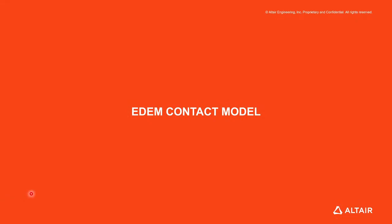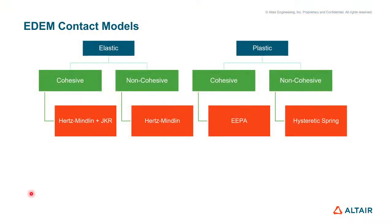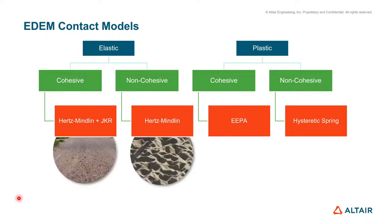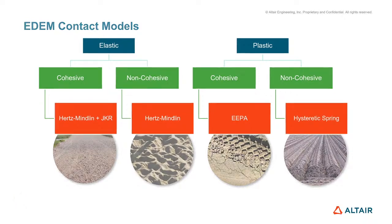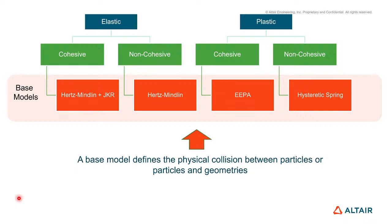그럼 지금부터 E-DEM에서 제공하고 있는 컨택 모델들에 대해 설명드리겠습니다. E-DEM의 컨택 모델은 기본적으로 소성성의 유무와 응집력의 유무에 따라 총 4가지로 구분됩니다. Hertz-Mindlin, Hertz-Mindlin + JKR, EPA, Hysteretic Spring, 이 4개의 컨택 모델이 각각을 대표하는 컨택 모델이며, E-DEM에서는 이를 베이스 컨택 모델이라고 구분합니다.